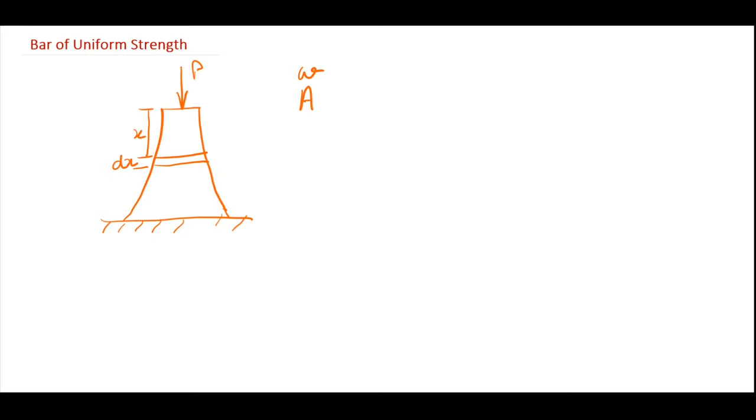Let's assume that A is the area at distance x. If I draw the free body diagram of this small element, so on the top I will be having the stress of value sigma, and on the bottom again as per our requirement the stress should be sigma.